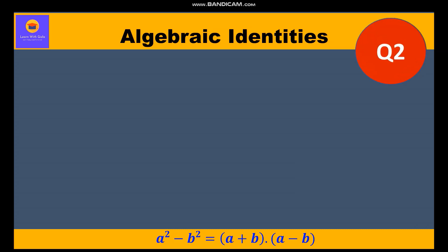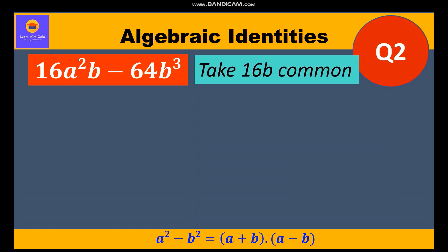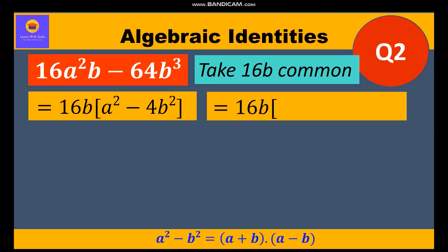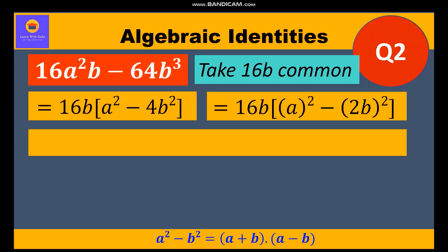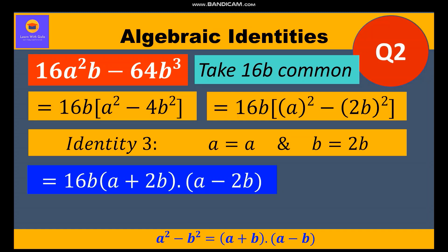Now let's move to our second question: 16a²b - 64b³. If you observe, 16 is a common factor of both terms and b is also common. So taking 16b outside, inside the bracket we are left with a² - 4b². Further, a² = (a)² and 4b² = (2b)². This is Identity 3 where a = a and b = 2b. So substituting, the factors are 16b(a + 2b)(a - 2b).